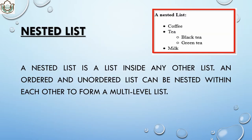Next is nested list — a list inside another list. When you are using a list and want to define another list within it, suppose you have a list of drinks: coffee, tea, milk, but you also want to define types of coffee. You can use a nested list there. An ordered and unordered list can be nested within each other to form a multi-level list.